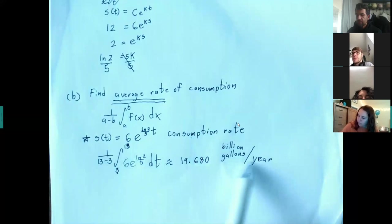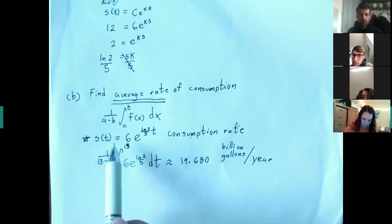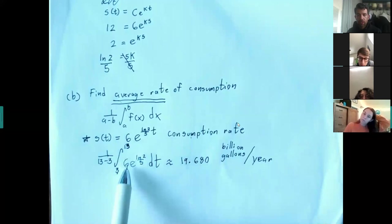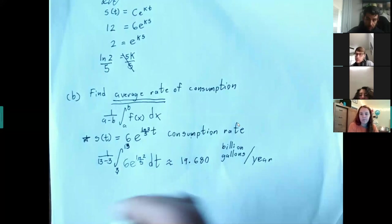This result has the same units as the original consumption rate function. The equation up top gives you the consumption rate at a specific time, and this average formula gives you the average rate of consumption. Does that make sense? It's almost like talking about average velocity versus instantaneous velocity.